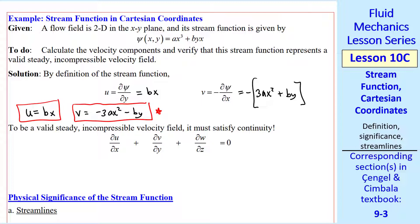But in order to be a valid, steady, incompressible velocity field, it must satisfy continuity. Let's check. Del u del x is just b from here. Del v del y is negative b from here. And this is a 2D problem, so w is 0. And thus we see that it does satisfy continuity.